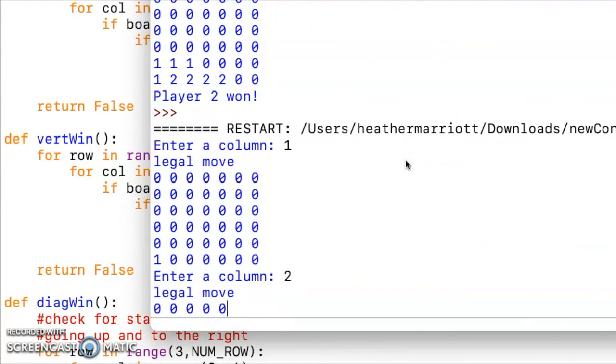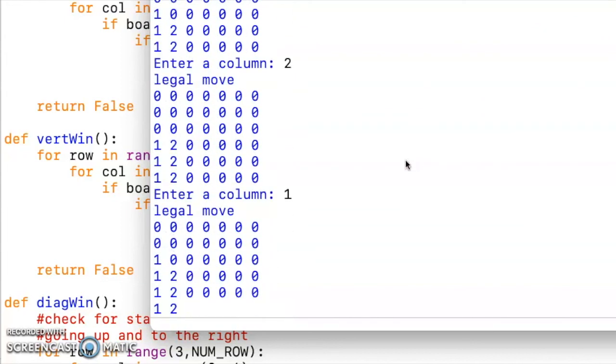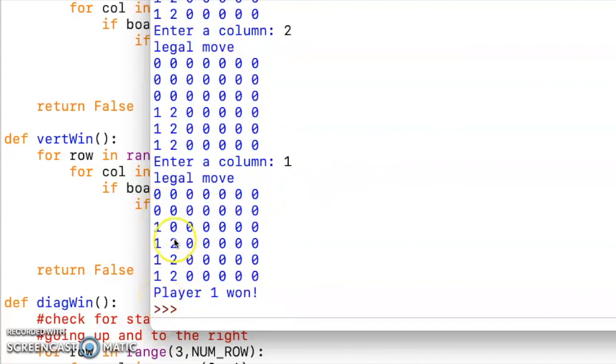So I'll start position one, two, and one of these players is going to win. I'm aiming for player one to win. And yet we did detect that win. All right, so I hope you enjoyed using Python for Connect Four.